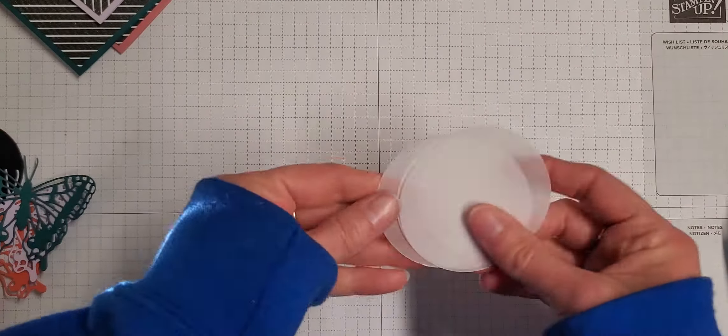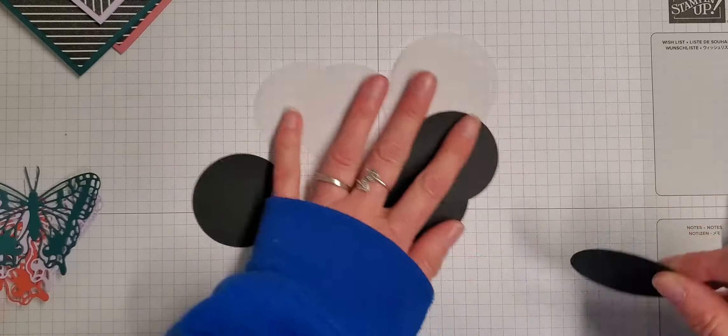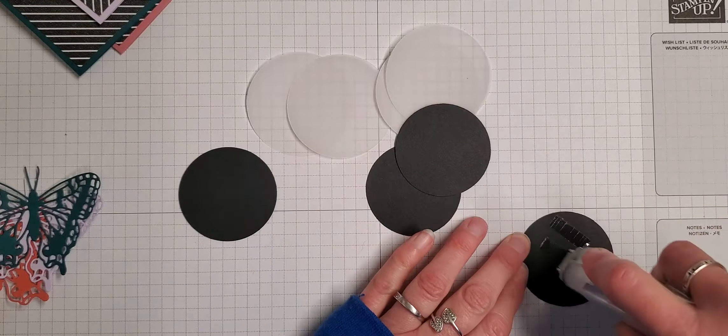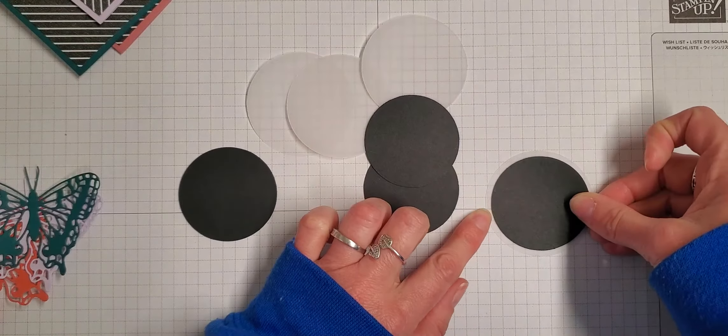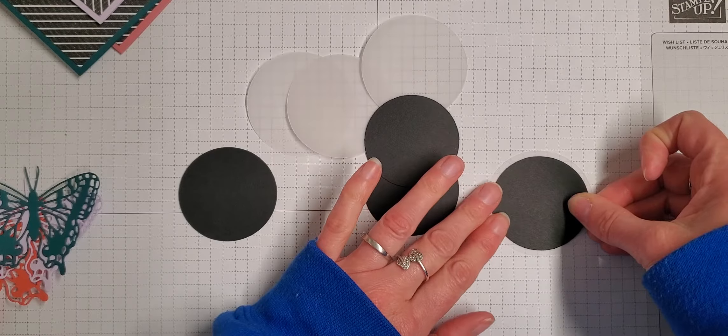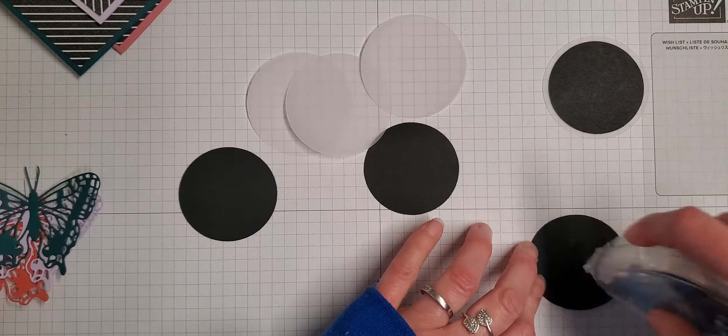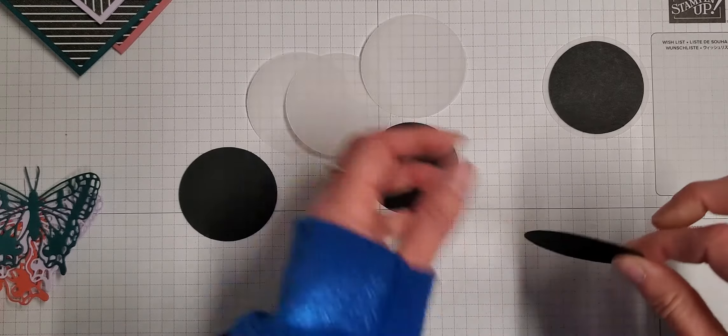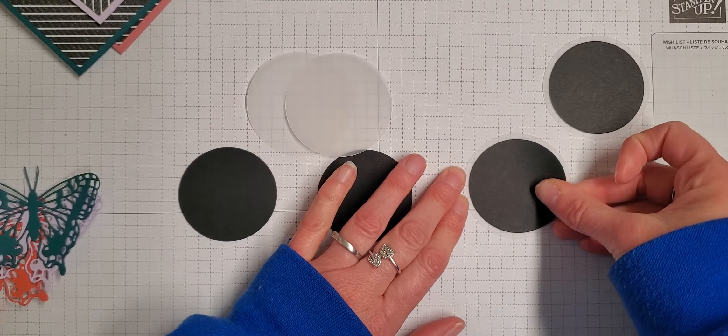So then what we did for these note cards is I punched out a two and a quarter inch vellum circle and a two inch black circle, and I'm just going to attach these to each other.